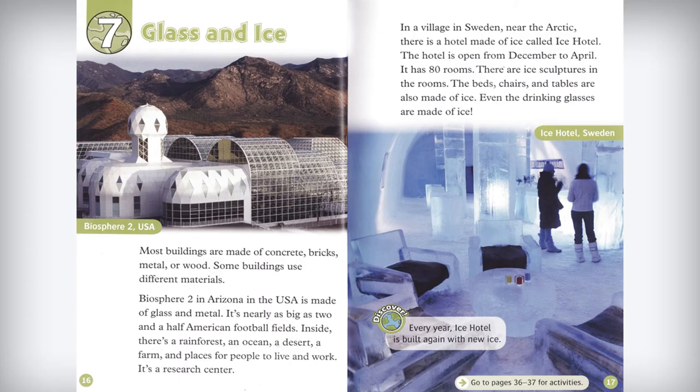Most buildings are made of concrete, bricks, metal, or wood, but some buildings use different materials. Biosphere 2 in Arizona, USA, is made of glass and metal. It's nearly as big as two and a half American football fields. Inside there's a rainforest, an ocean, a desert, a farm, and places for people to live and work. It's a research center.